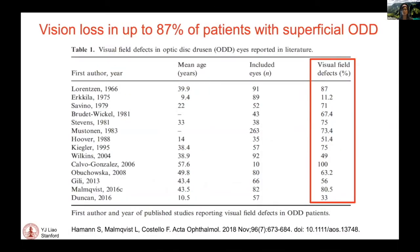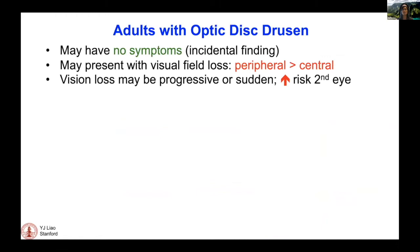Vision loss occurs in the majority of patients with optic disc drusen, and it's particularly prominent in those with superficial drusen. A 2018 paper by Stephan shows a variety of prior publications and the percentage of optic disc drusen patients that have visual field defects.